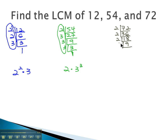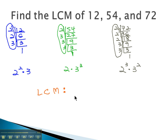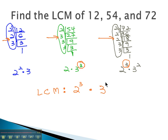Now that we have those prime factorizations, we can identify the least common multiple by taking all factors with the highest exponents. As we were dividing, the factors we ended up with were 2's and 3's. We will attach to the 2 and 3 the highest exponent that shows up on each. Looking at our 2's, the highest exponent is 3 — from 12's factorization — so we have 2 cubed. Looking at our 3's, the highest exponent is cubed, so we attach a cubed onto the 3.